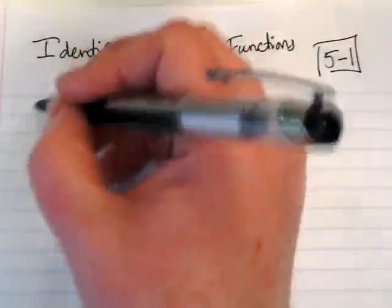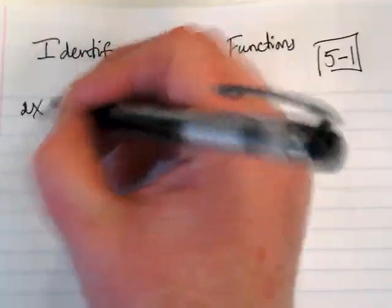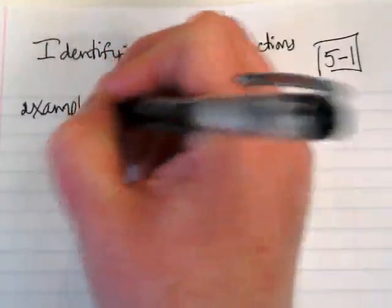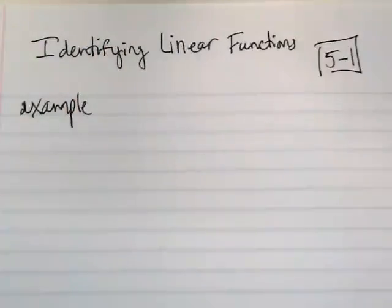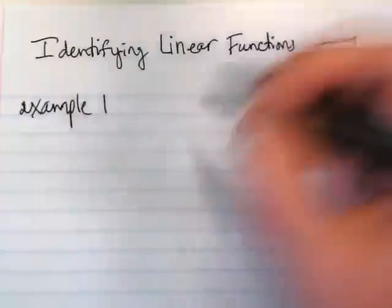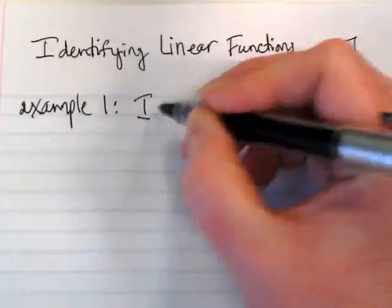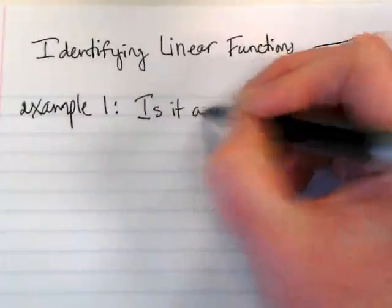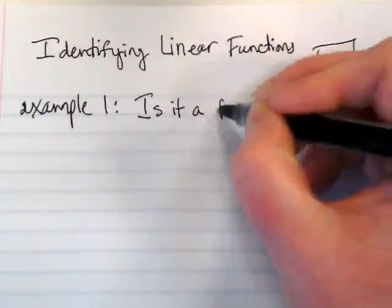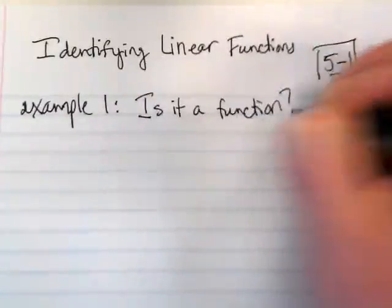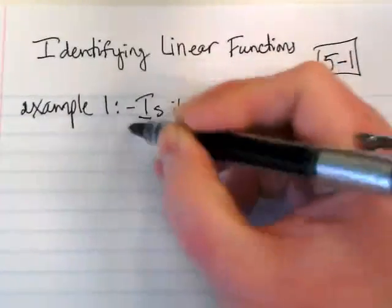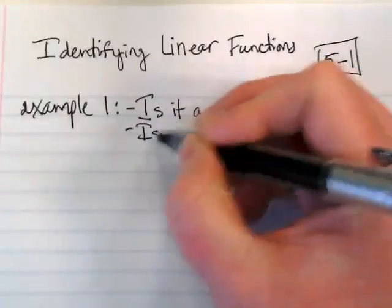So when we're thinking about identifying linear functions, this is what example one is in your book. If you take a look at those three graphs that are there, we're going to ask ourselves two questions. One, is it a function? And two, is it a linear function?